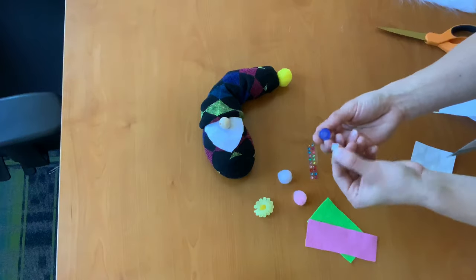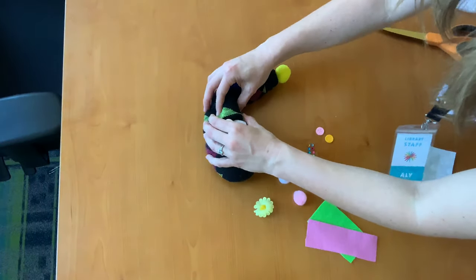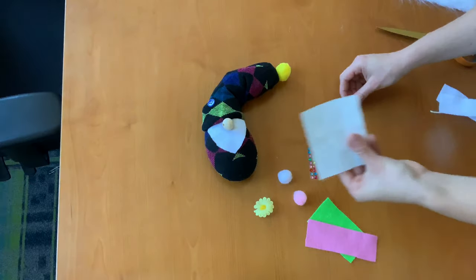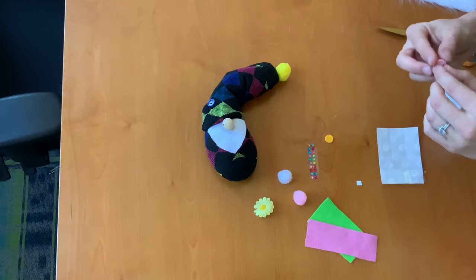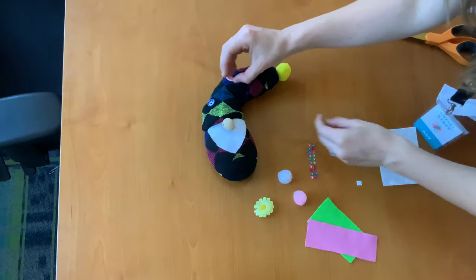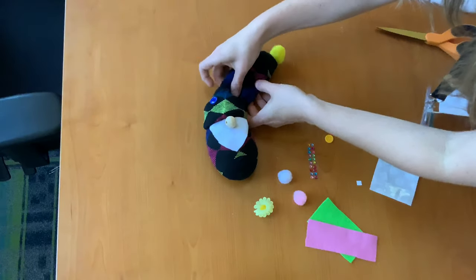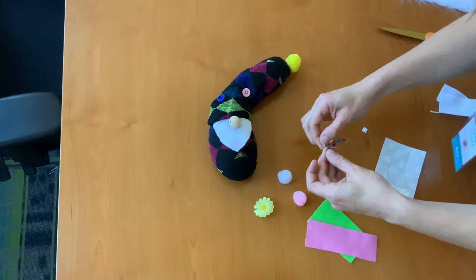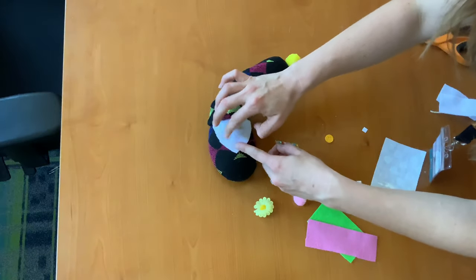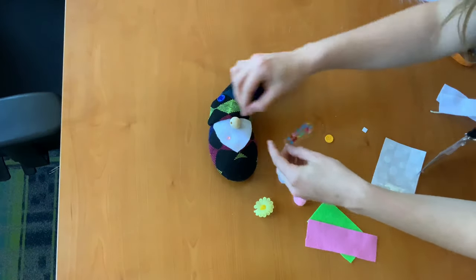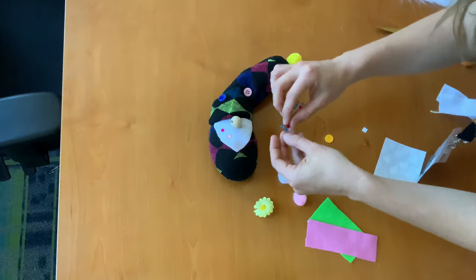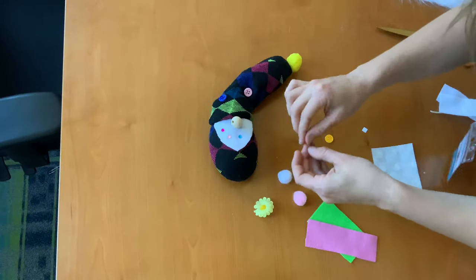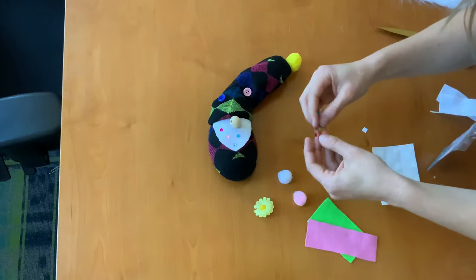These buttons, you just have to peel the back off and they'll stick so you don't even need to use any of your glue dots. So you can add these buttons wherever. You can use some of the jewels and you can decorate your gnome. Let's put some jewels in his beard. Maybe he's been visited by the fairies recently. Leaving sparkles everywhere. There we go.